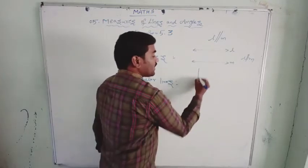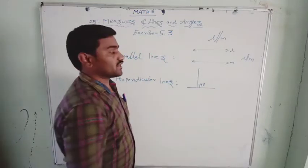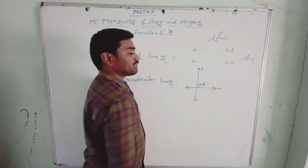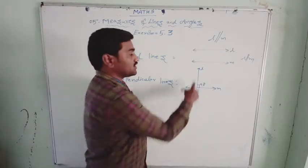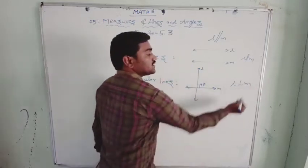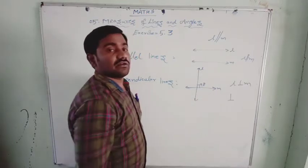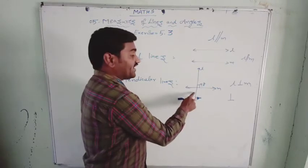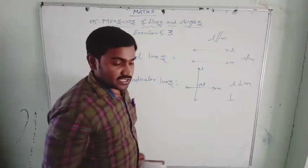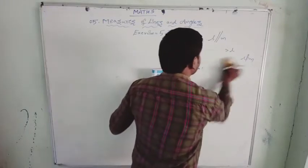And perpendicular lines: if one line intersects the other line exactly at an angle of 90 degrees, then they are called perpendicular lines. Suppose line L intersects line M perpendicularly at the angle of 90 degrees — then these two lines are called perpendicular lines. Line L is perpendicular to line M. Because these two lines are intersecting perpendicularly at the angle of 90 degrees, if two lines are intersecting each other at 90 degrees they are known as perpendicular lines. Based on this concept we have completed exercise 5.3, about parallel lines and perpendicular lines.